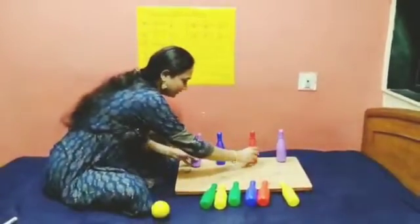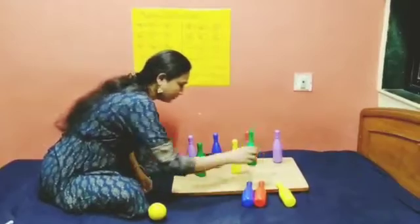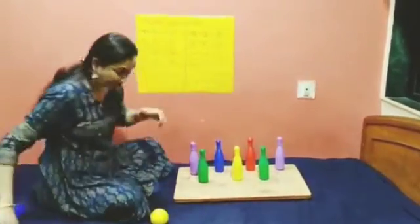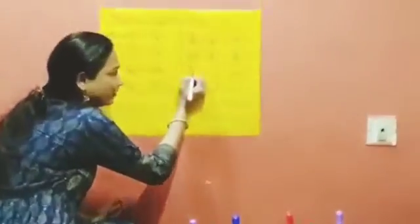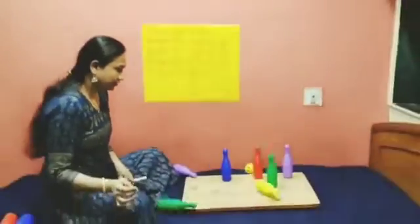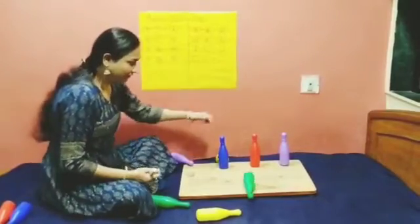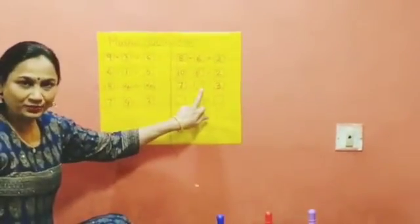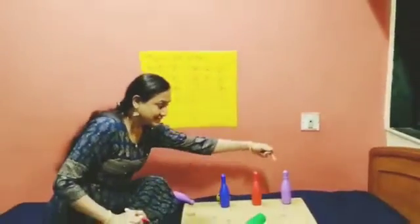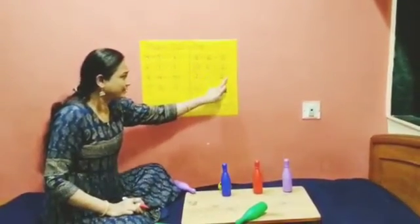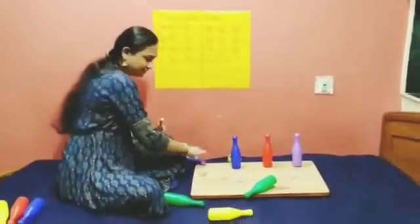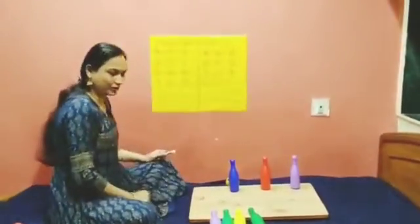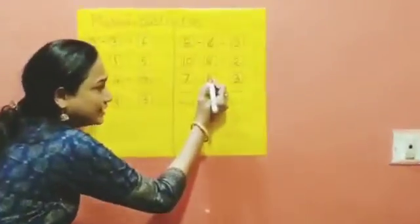Now let's see one more. 1, 2, 3, 4, 5, 6, 7. How many bottles are there? 7 bottles are there. After throwing, 3 bottles are left. How many bottles fell down? 7 minus this 3 — so you will get the number of bottles that fell down: 1, 2, 3, 4. Got it children? 7 minus 3 is 4.